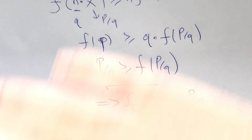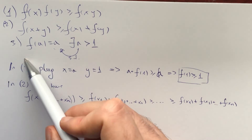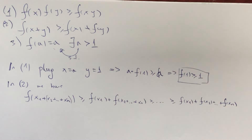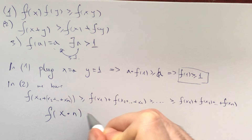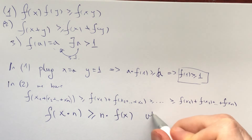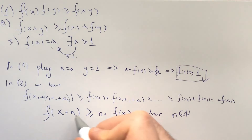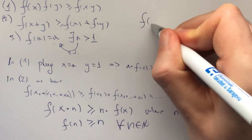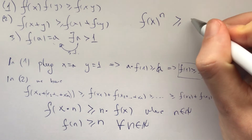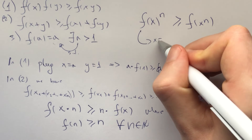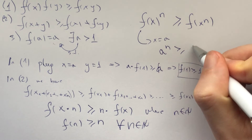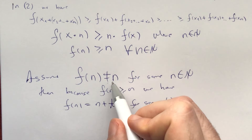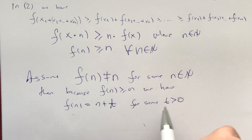Now let's write this up cleanly. First, plug x = a, y = 1 into inequality one to get f(1) ≥ 1. By inductively applying inequality two, f(nx) ≥ n·f(x) for natural numbers n. This implies f(n) ≥ n for all natural numbers n. From inequality one, f(x^n) ≥ f(x)^n, and with x = a we get a^n ≥ f(a^n). Now assume f(n) ≠ n, so f(n) = n + t for some t > 0.